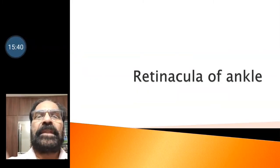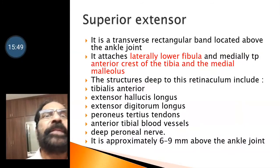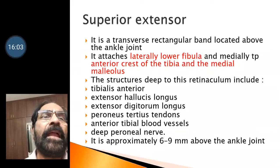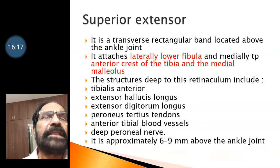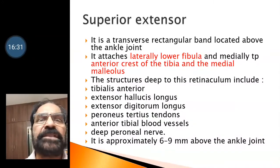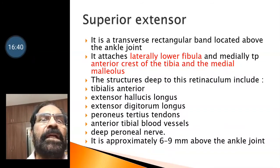Now we go to the retinacula of the ankle. First we will start with the superior extensor retinaculum. It is a transverse rectangular band located above the ankle joint. It attaches laterally to the lower fibula and medially to the anterior crest of tibia and medial malleolus. The structures passing deep to the retinaculum include tibialis anterior, extensor hallucis longus, extensor digitorum longus, peroneus tertius, anterior tibial blood vessels, deep peroneal nerve. It is located approximately 5 mm to 1 cm above the ankle joint.